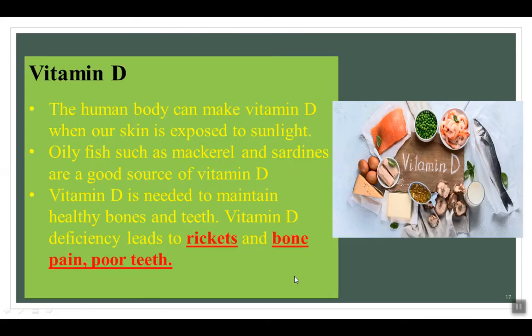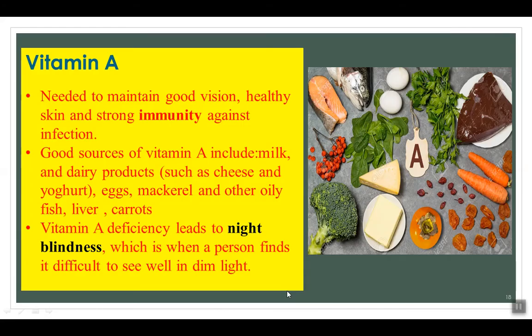Vitamin D is needed for growing bones to take up calcium salts. A deficiency of vitamin D can result in rickets. Fish liver oils and sardines are a good source of vitamin D, and the human skin can also make vitamin D when exposed to sunlight. Vitamin A is needed to make a light-sensitive chemical in the retina of the eye. A lack of vitamin A causes night blindness, where a person finds it difficult to see in dim light. Carrots, butter, fish and liver are good sources of vitamin A.